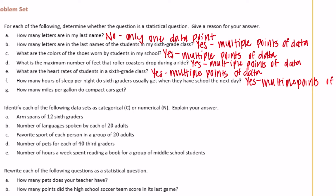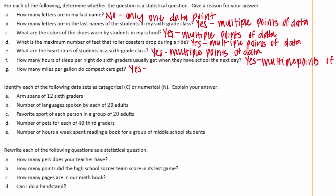Part G: 'How many miles per gallon do compact cars get?' There are different types of compact cars and they don't all get the same amount of miles per gallon. Some might get 26 miles per gallon, some 25, and it depends on whether it's a hybrid, electric, or gas car. So yes, this is statistical because it has multiple data points.